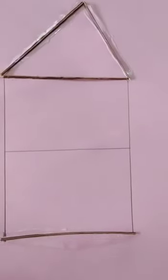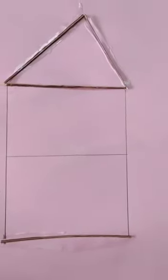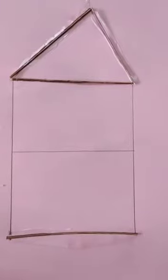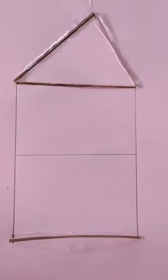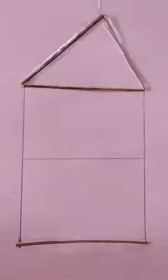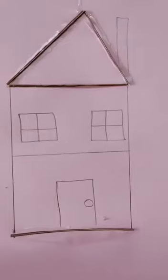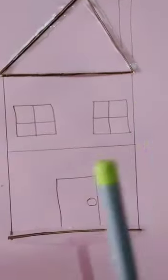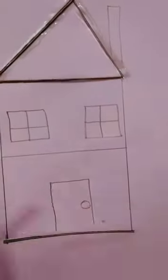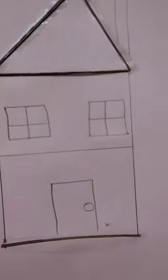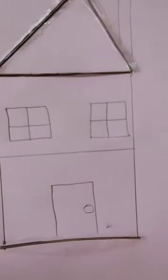Wait, I am going to stick it. You have to make the roof of your kachya house. Now we will draw doors and windows. You need to draw windows, doors, and then we will stick the broom.